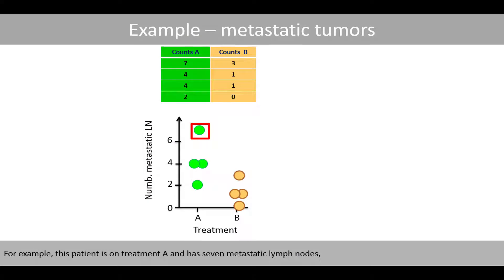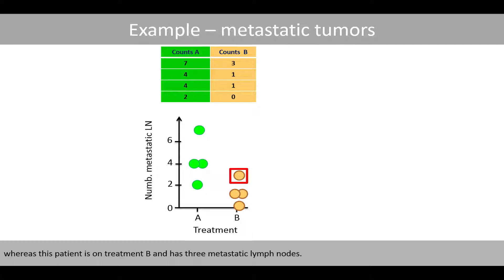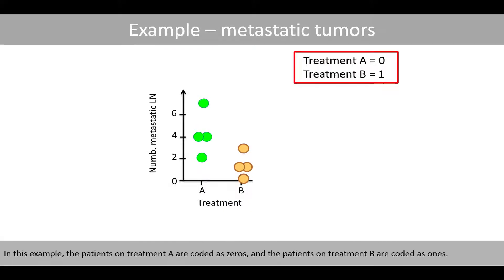For example, this patient is on treatment A and has seven metastatic lymph nodes, and this patient is also on treatment A but has two metastatic lymph nodes, whereas this patient is on treatment B and has three metastatic lymph nodes. In this example, the patients on treatment A are coded as zeros and the patients on treatment B are coded as ones.